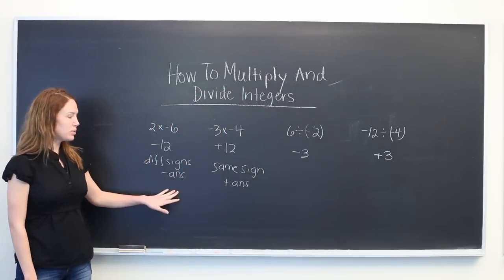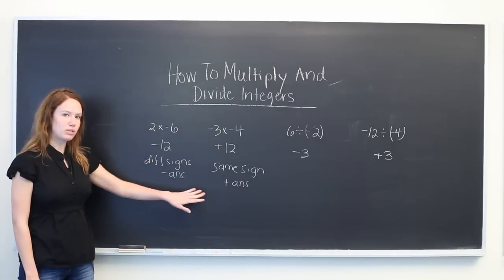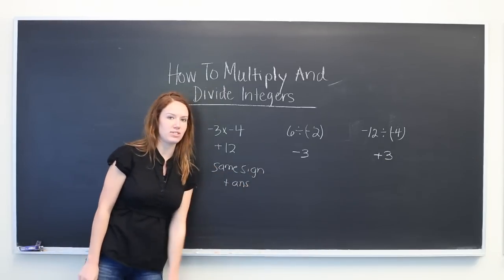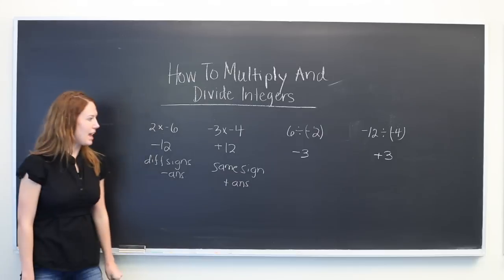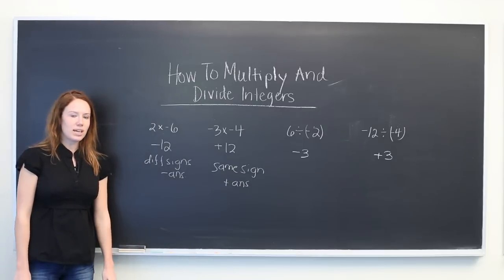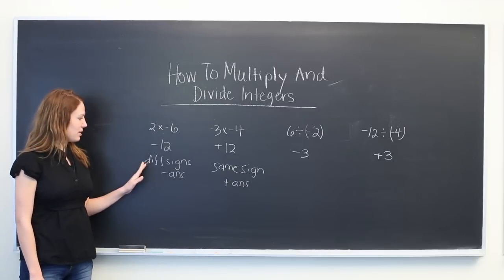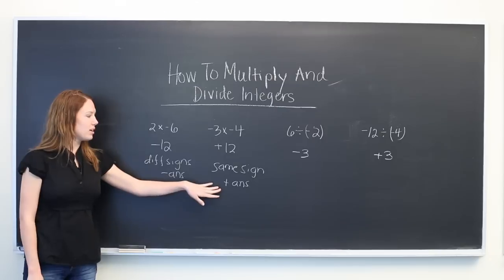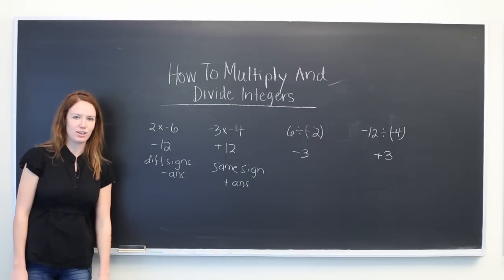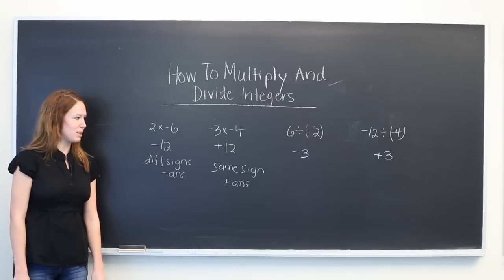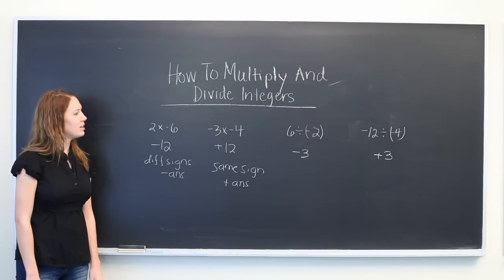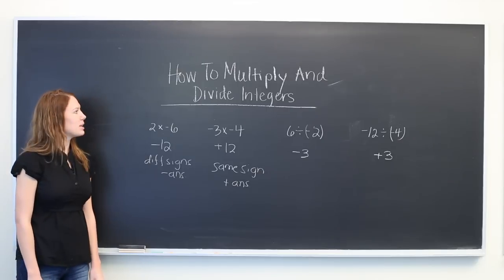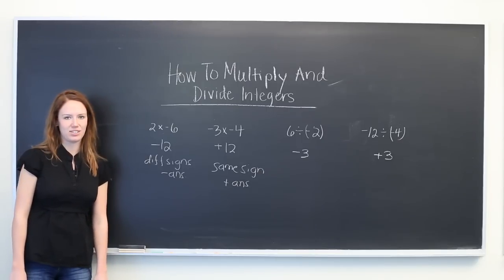So the two rules for multiplication also hold for division of integers. You see in these four cases that when the signs are different, the answer is going to be negative, and when the signs are the same, the answer will be positive as well. Thanks for watching. My name is Whitney and this video explains how to multiply and divide integers.